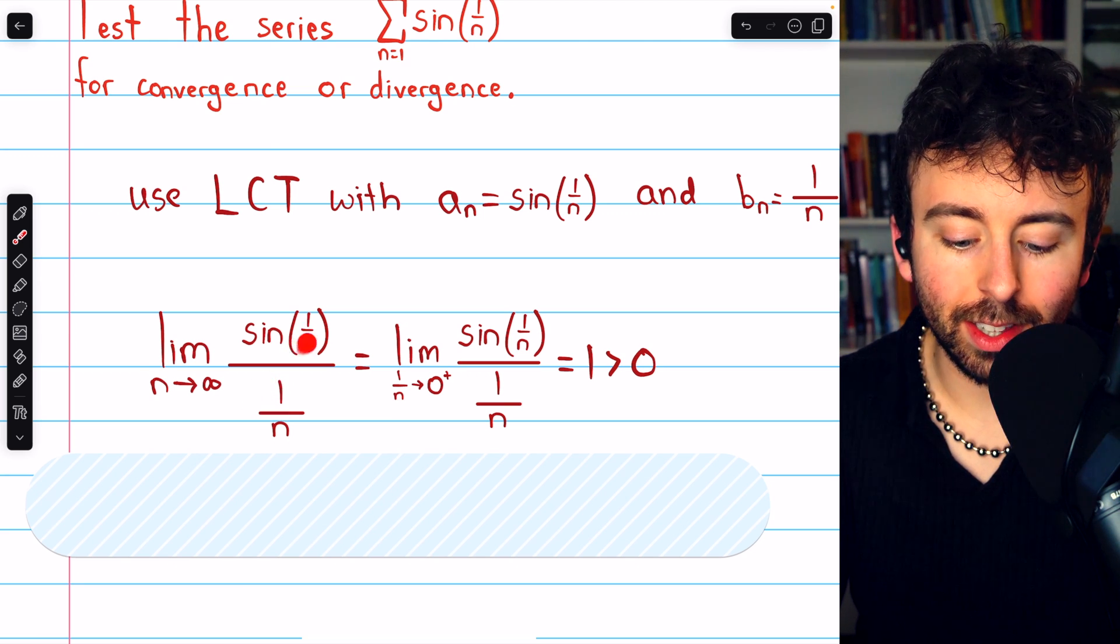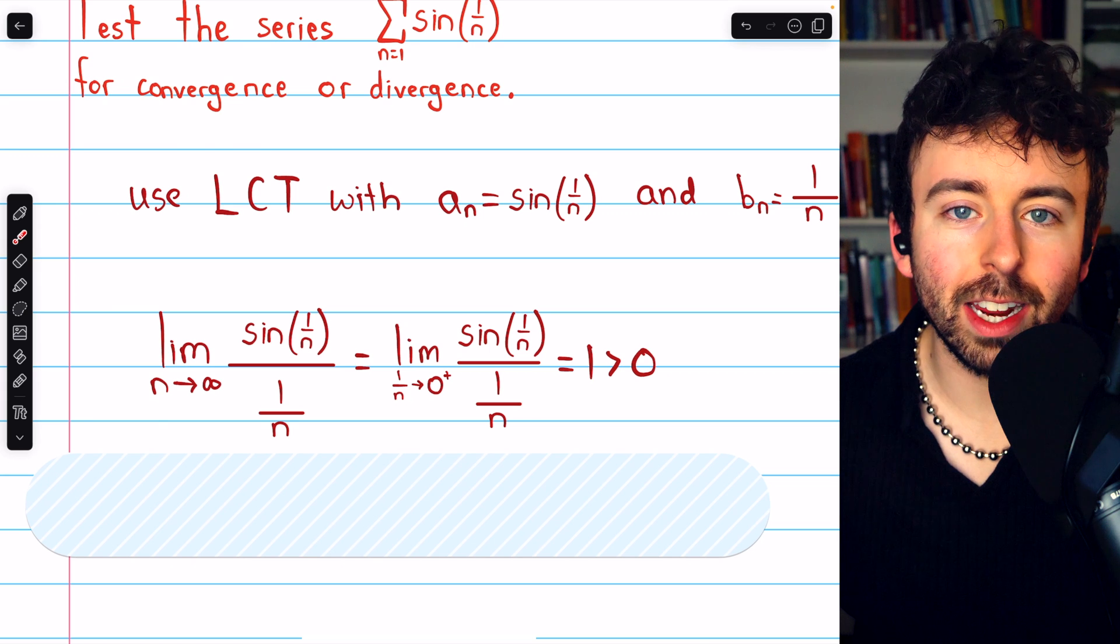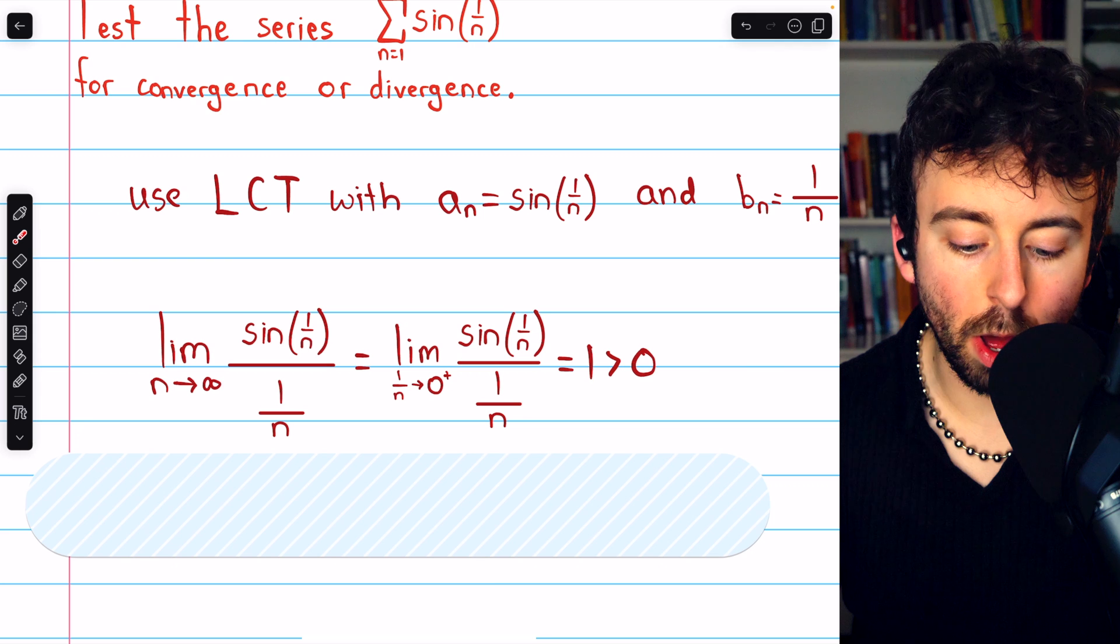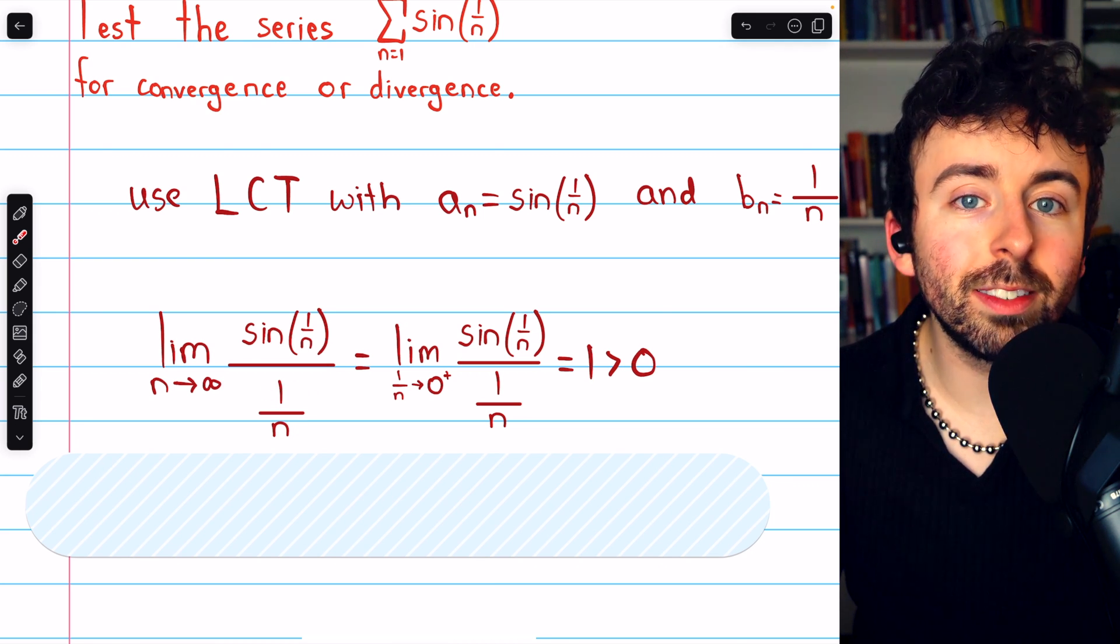Now, what is that thing doing, the input of sine that we're also dividing by? Well, n is going to infinity. So this thing, the 1 over n, is actually approaching 0.